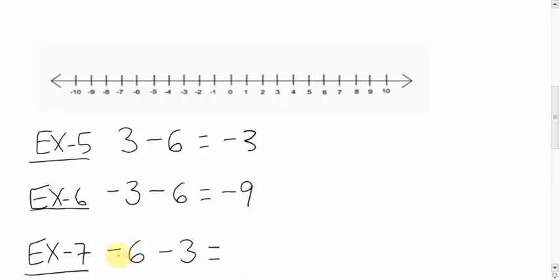This question here, you're starting at negative 6 and you're going to change direction. Instead of going forwards, you're going to go backwards 3. 1, 2, 3. You're down 9. Same thing. You're down 6. You're down 3. You're down 9.